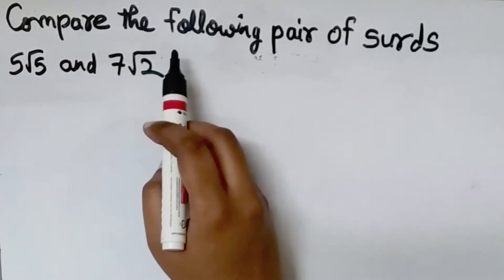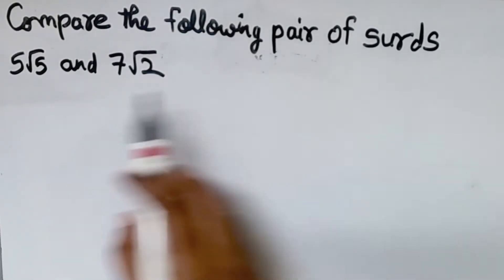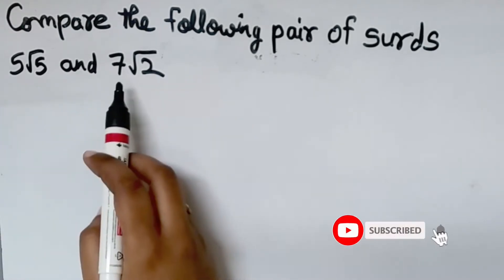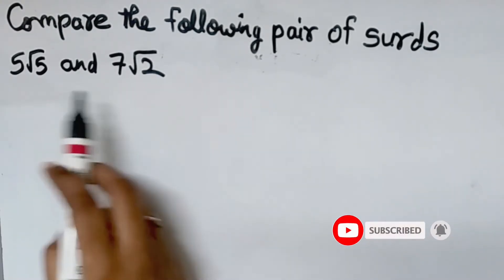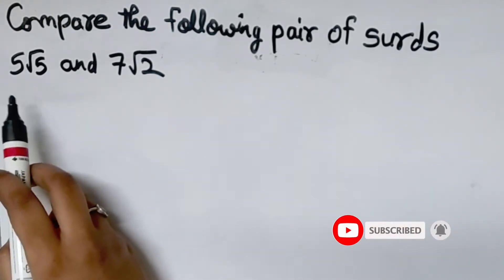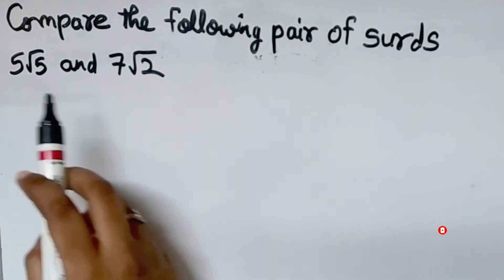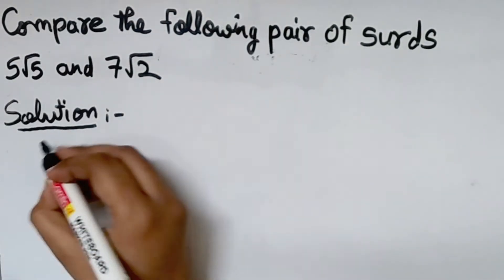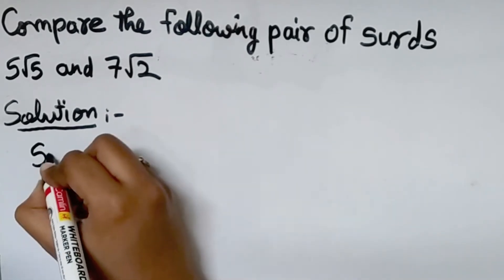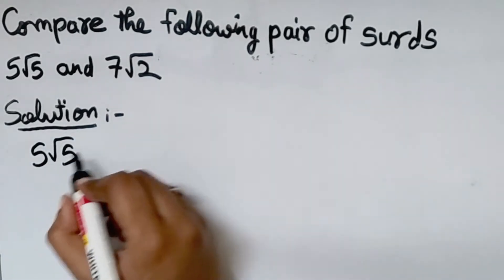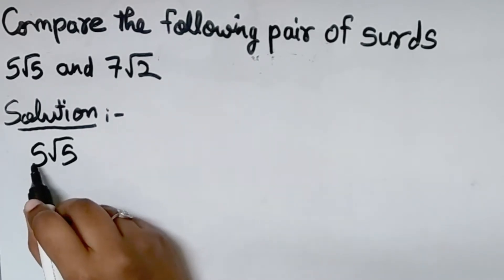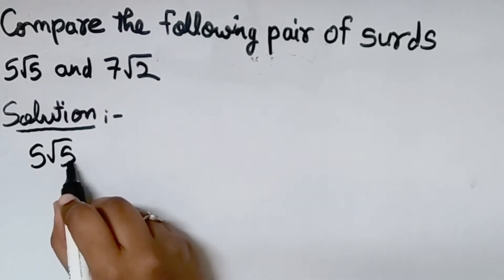Compare the following pair of surds. Here there are two surds: 5 root 5 and 7 root 2. We have to find which surd is bigger. First we will see 5 root 5. Here 5 is outside the square root sign, so we have to take this 5 also inside the square root.